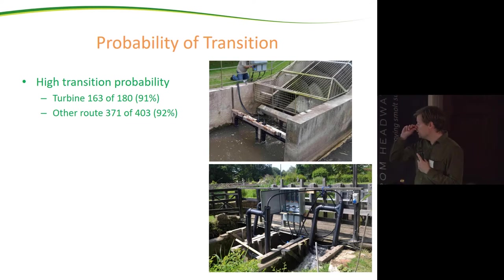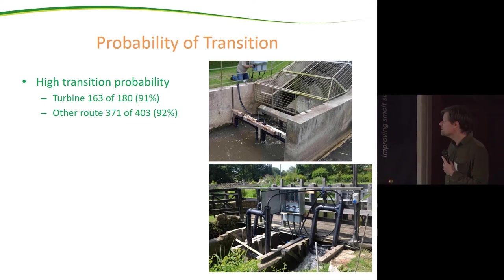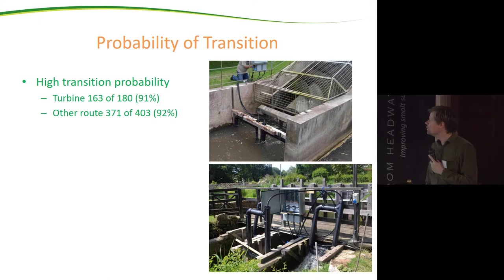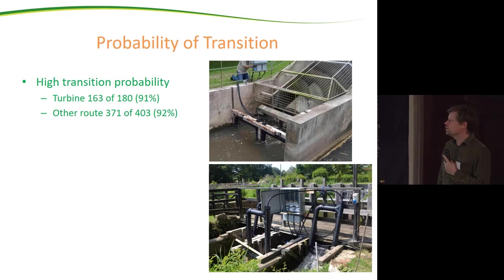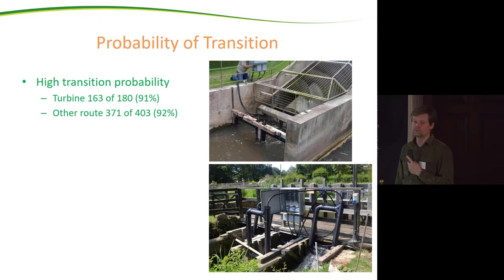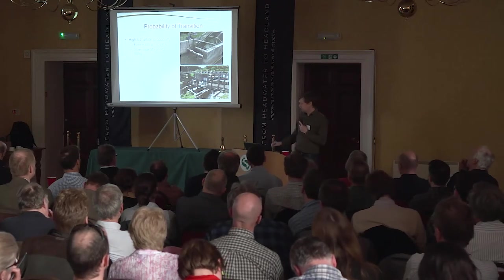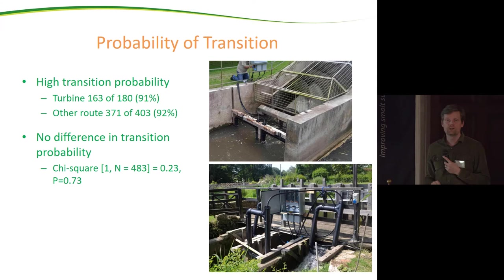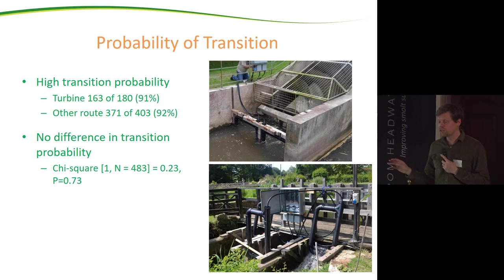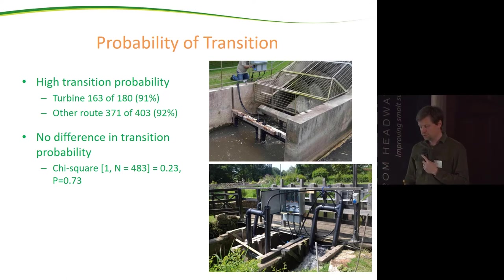Looking at the probability of transition to East Stoke, 91% of individuals detected at the turbine were re-detected there, compared to 92% of those using other routes. These are not actual survival measures — no telemetry system is 100% efficient — but they indicate a very high probability of survival with no effect of going through the turbine on a medium-term basis. Basically the same proportion of fish using the turbine route as other routes made it down to East Stoke.